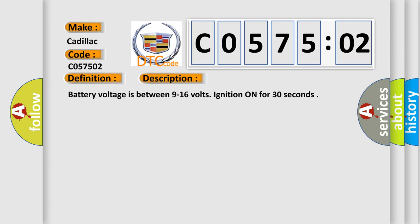And now this is a short description of this DTC code. Battery voltage is between 9 to 16 volts. Ignition on for 30 seconds.